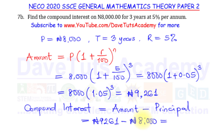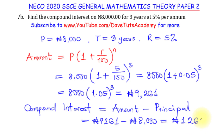This is where you actually get to understand the power of compound interest. Subtracting, we get one thousand two hundred and sixty one Naira as the compound interest on the amount of eight thousand Naira deposited for three years at five percent per annum.